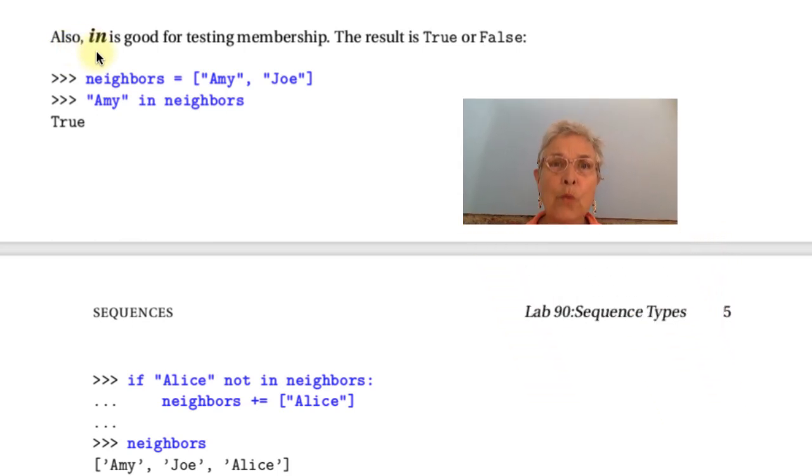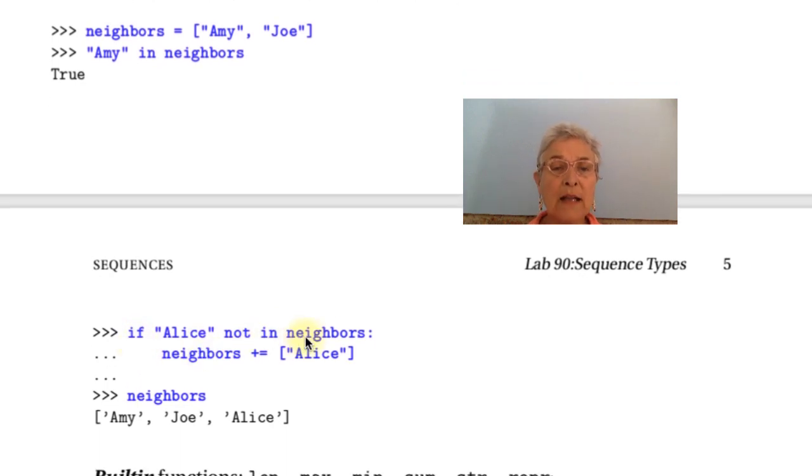In, you can use and will use without the for. It's the piece of the situation that does a loop, compiled C loop inside the interpreter and saves you from having to do a loop. I have some neighbors and I say, Amy in neighbors. And it says true because she is. And this is a common situation. If Alice not in neighbors, put her in there. Both work just fine. So, do the one that you understand better.